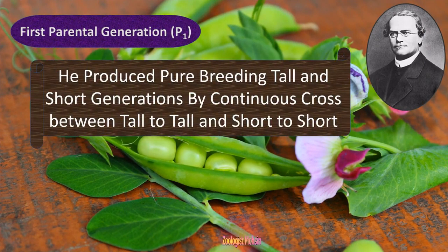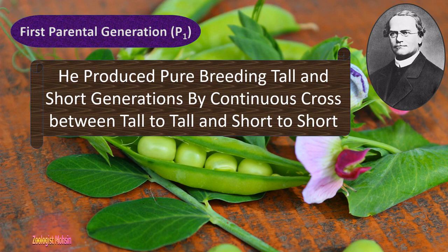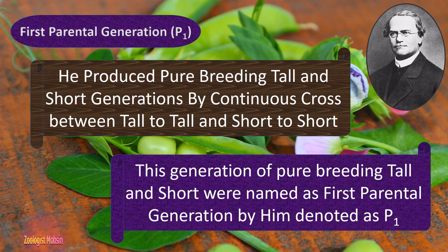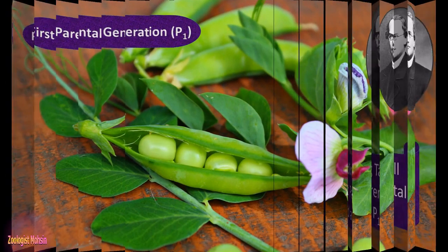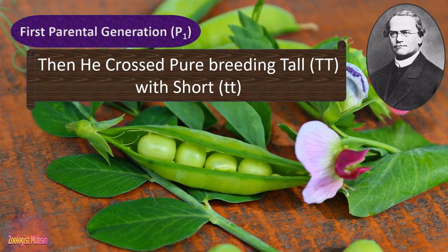First, the parental generation. Mendel did all his work on Pisum sativum, the pea plant, and he produced pure-breeding tall and short generations by continuous crossing of tall to tall and short to short. It took many years to produce these pure breeds in separate fields. When these generations of pure-breeding tall and short were ready, they were named the first parental generation by him, denoted as P1.